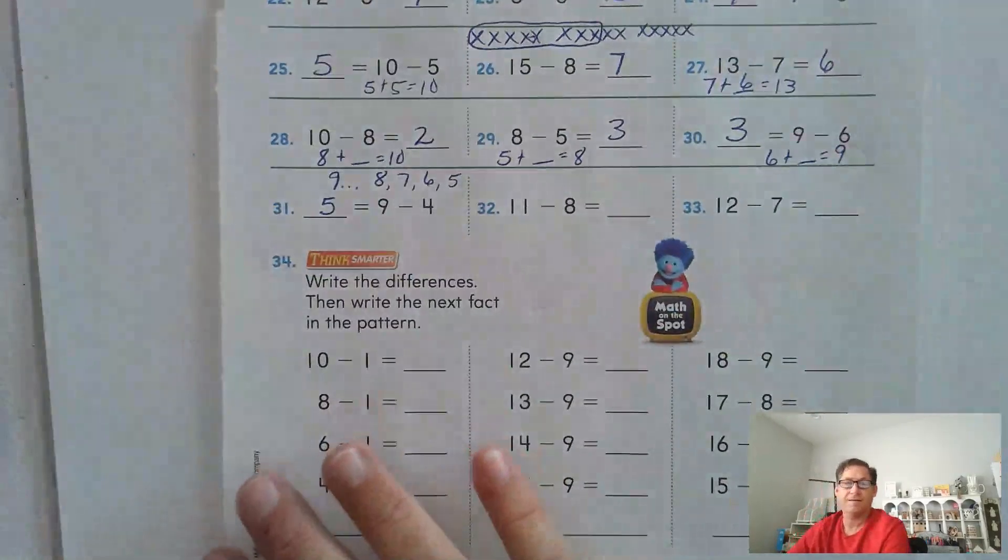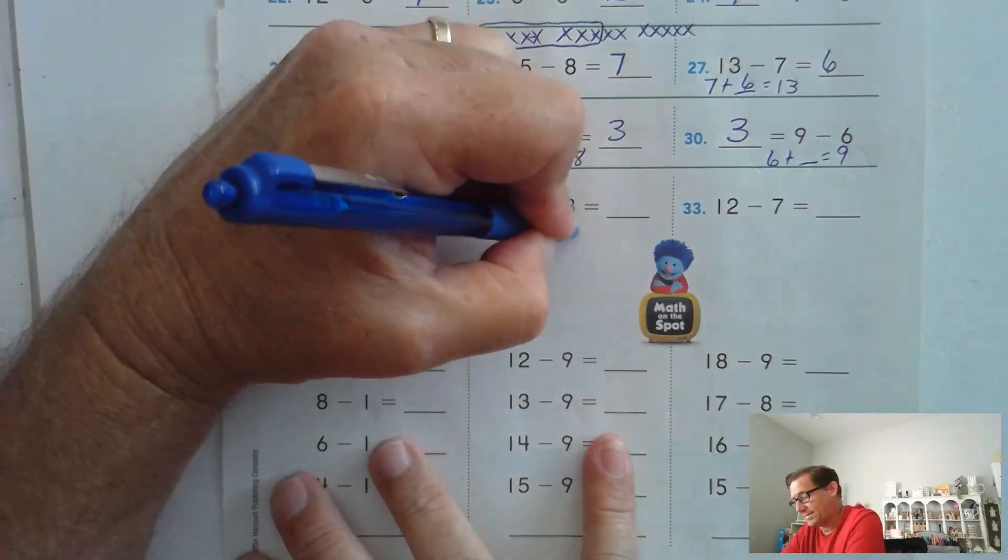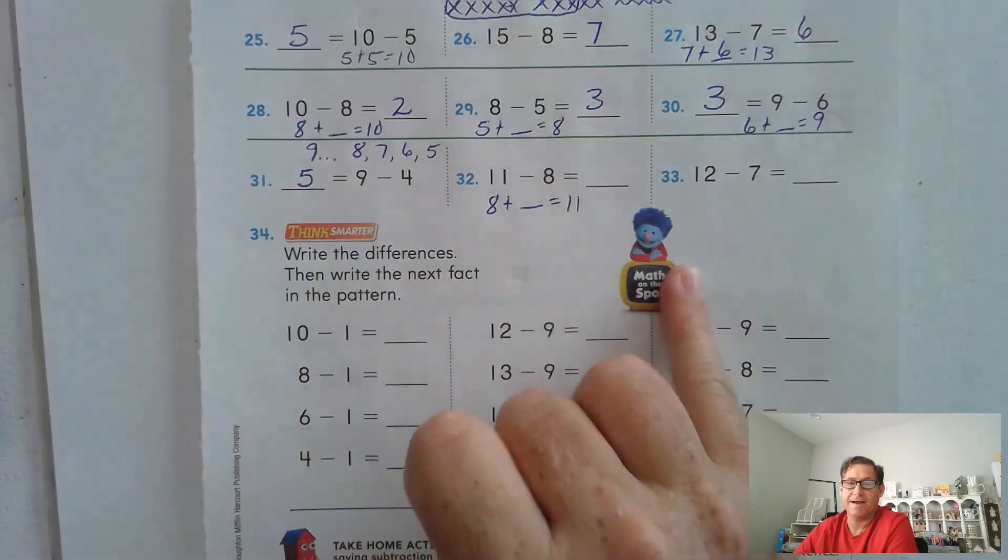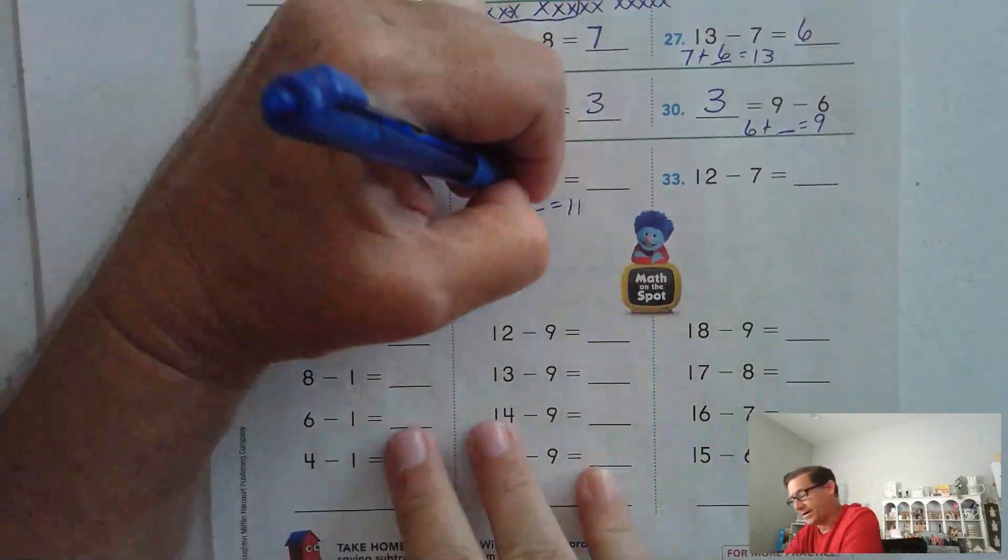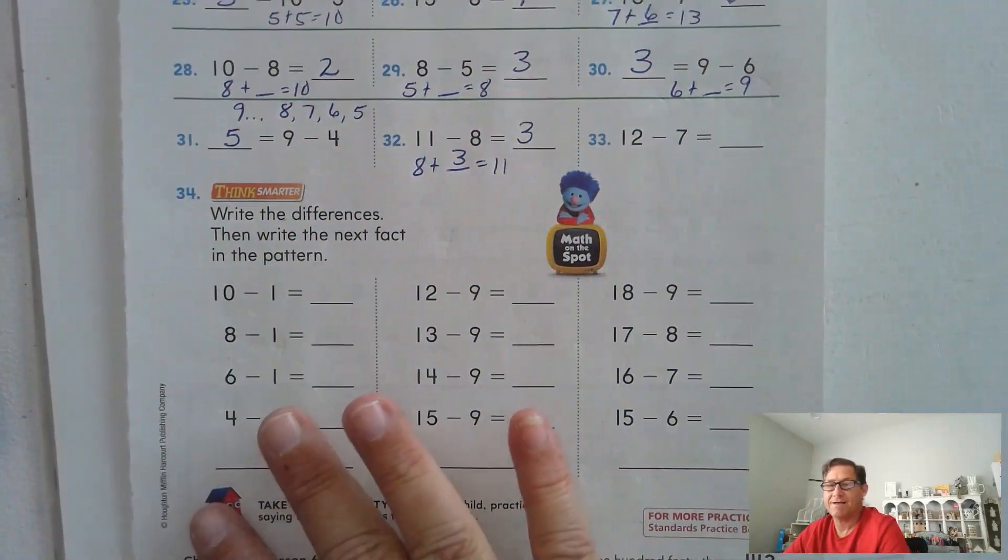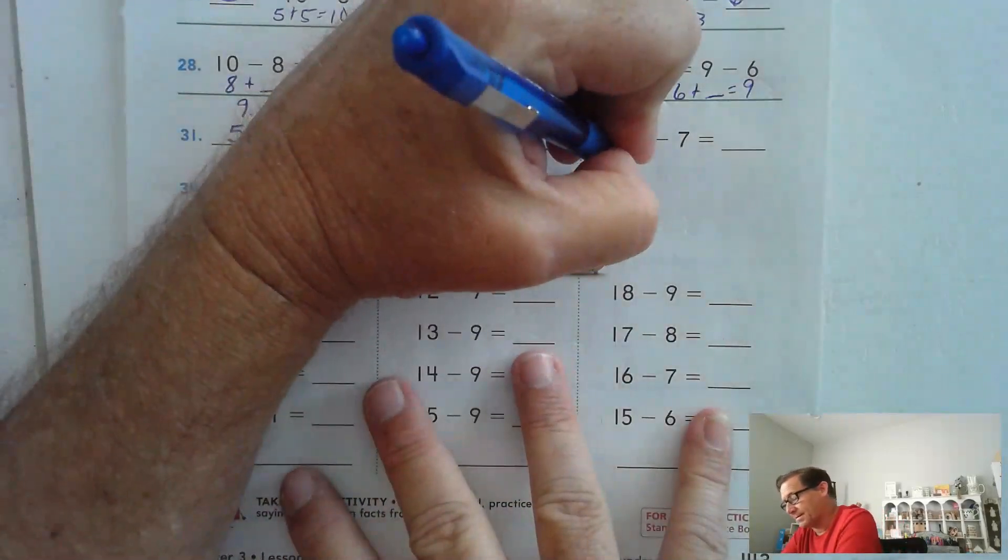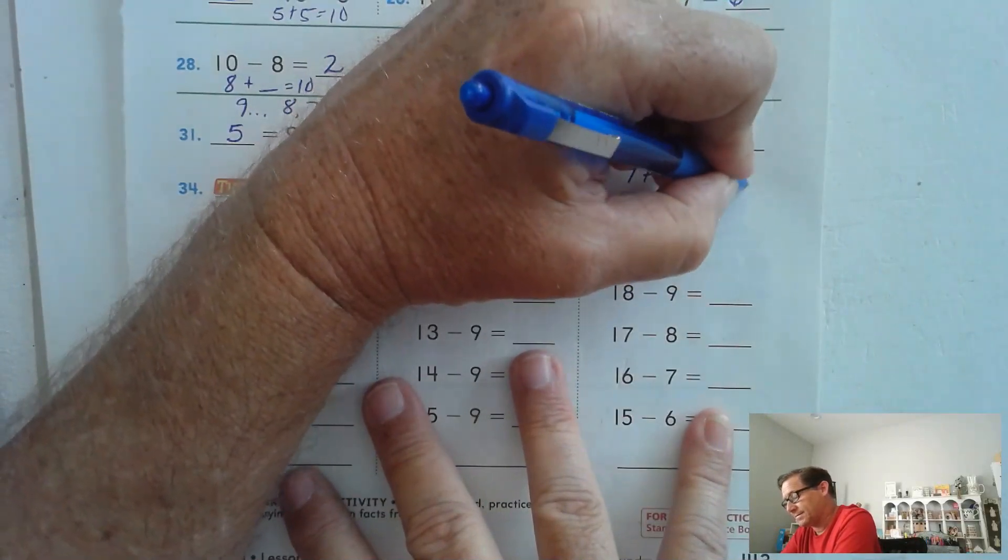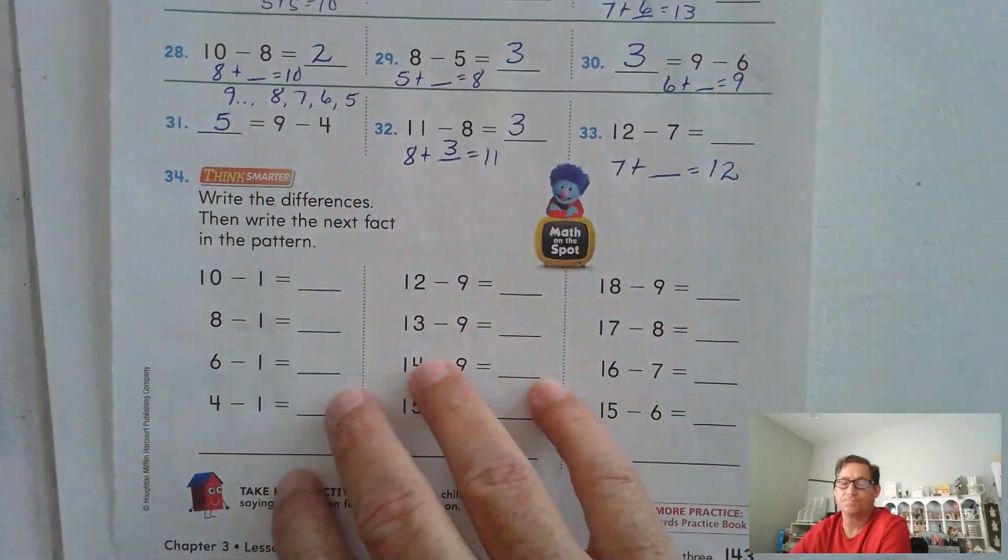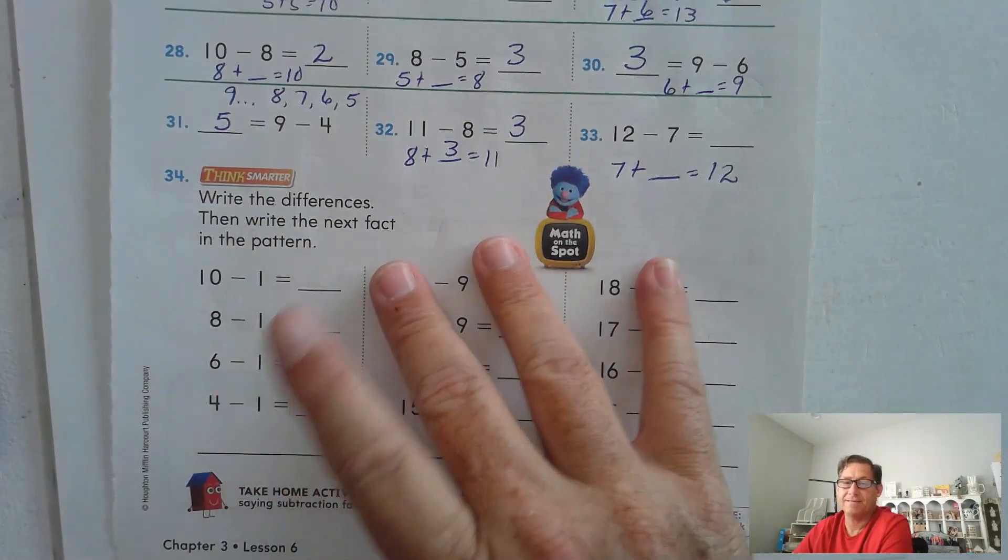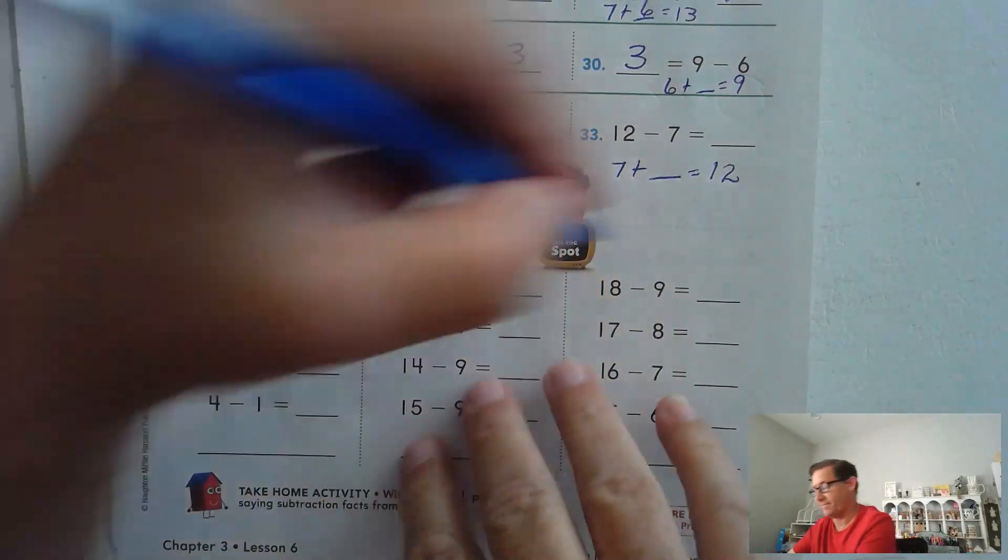9 minus 4. 11 minus 8. 8 plus what is 11? Count up: 8, 9, 10, 11, 3. 12 minus 7. 7 plus what is 12? 7, 8, 9, 10, 11, 12, 5.